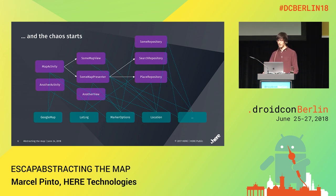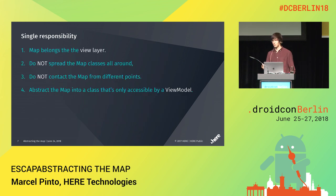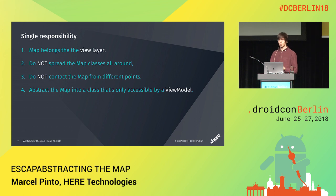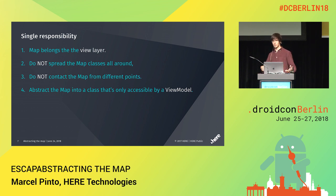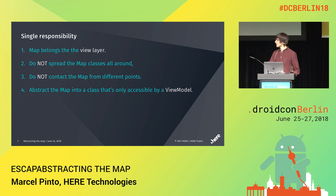Let's take a look at the first principle: single responsibility. It means that a component should not do more things than it's supposed to. To start with maps — maps are rendering something on the view. So do not put maps in a different layer. Maps belong to the view layer. As well, do not spread those classes all around the application — these classes are for the map, so they belong to the map view. Do not try to contact this map from other points. In general, you just need to abstract the map so it's only accessible from either your presenter or your view model.